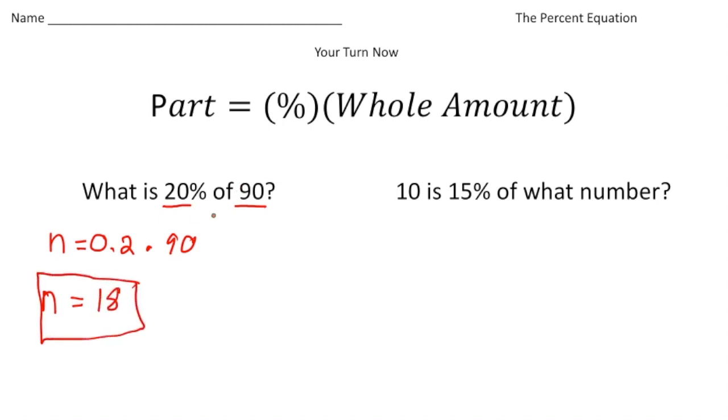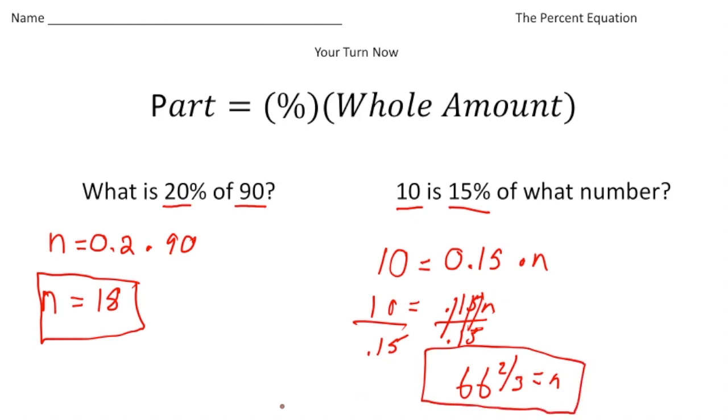Now the second one says 10 is 15% of what number? So again, they give us the percentage, but this time they give us the part, so we need to solve for the whole amount. So the equation for this one should have been 10 equals 15 hundredths times the unknown, n. And to solve for it, you need to divide both sides by 15 hundredths. When you do 10 divided by 15 hundredths, you should have gotten 66 and 2 thirds equals n. And there's your answer. All right, how'd you do?